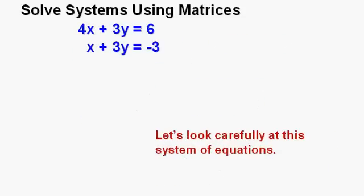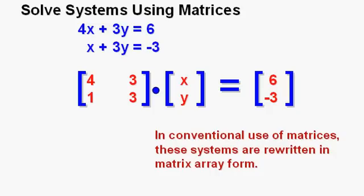Let's look at this first system of equations. We have 4x plus 3y equals 6 and x plus 3y equals negative 3. We have to look carefully and see that each equation is in ax plus by equals c form and we see that each equation is.